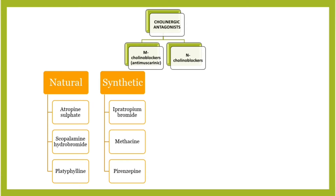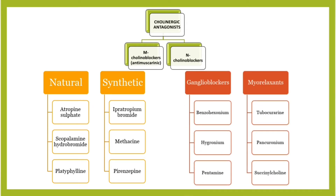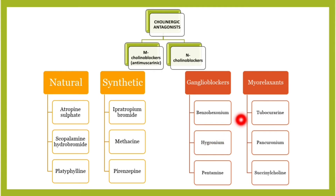N-cholinergic blockers can be divided into ganglioblockers and myorelaxants. Ganglioblockers include benzohexonium, hygronium, and pentamine. Myorelaxants include tubocurarine, pancuronium, and succinylcholine.